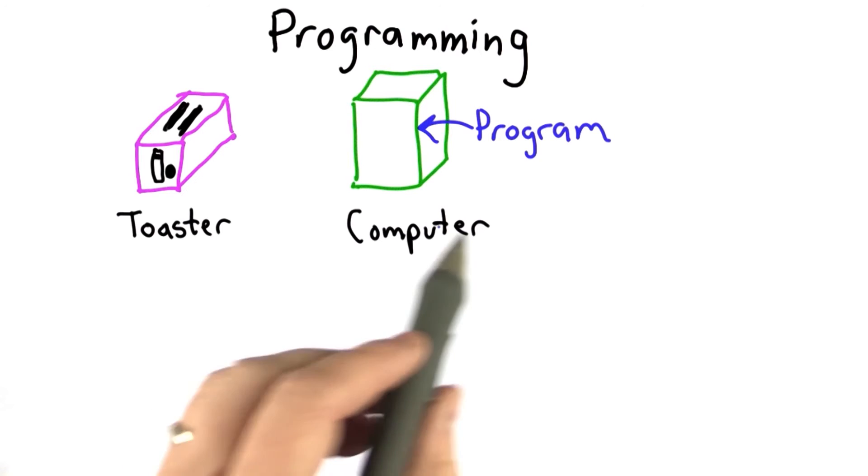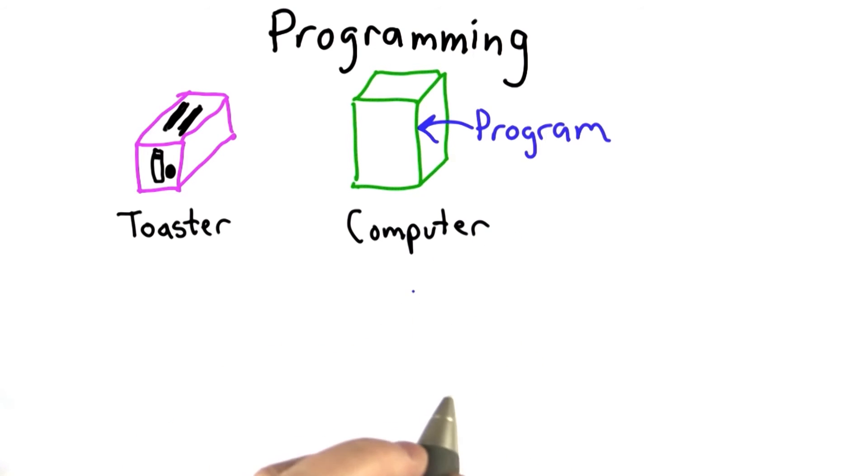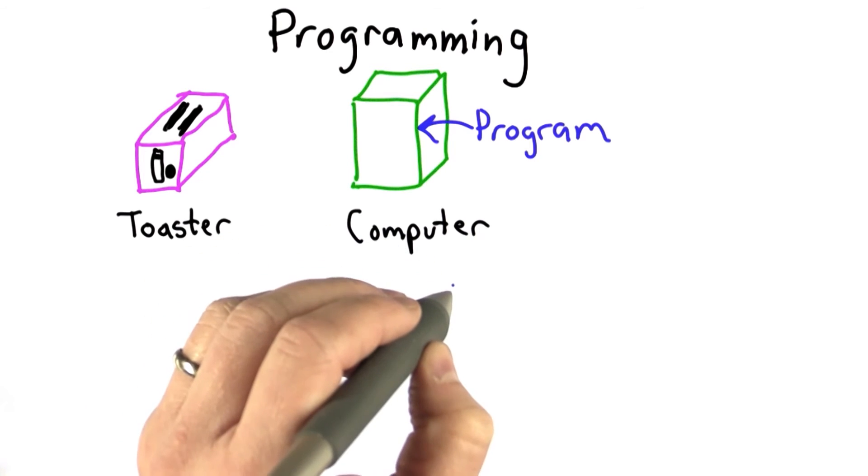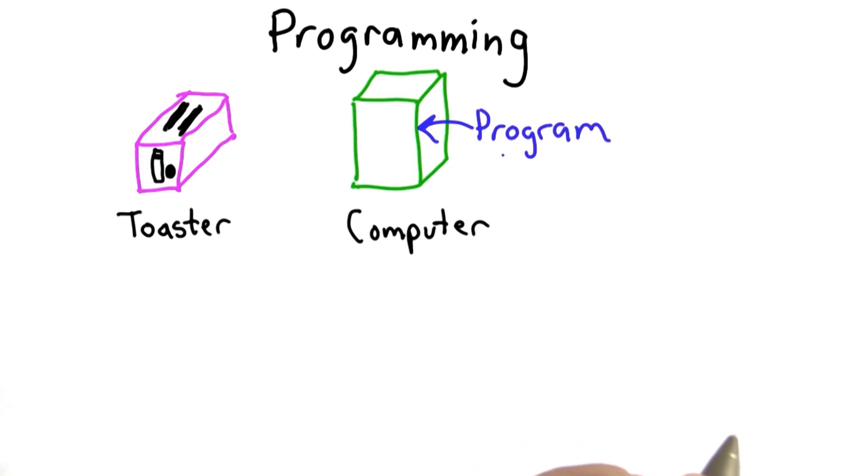The power of the computer is that it can execute those steps super, super fast. We can execute billions of instructions in one second. The program gives us a way to tell the computer what steps to take.